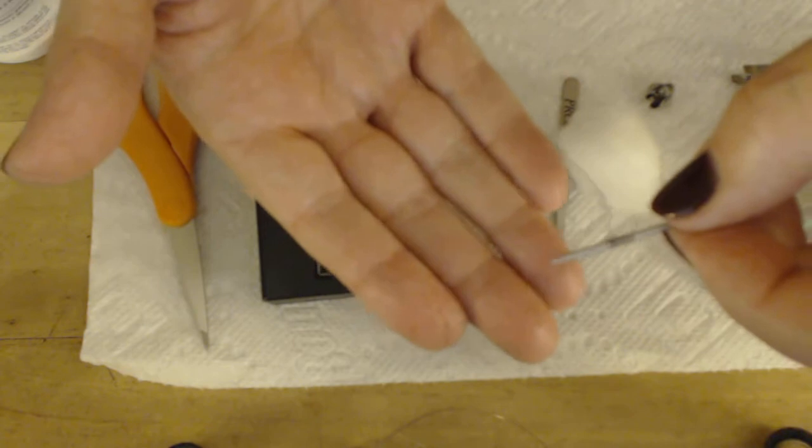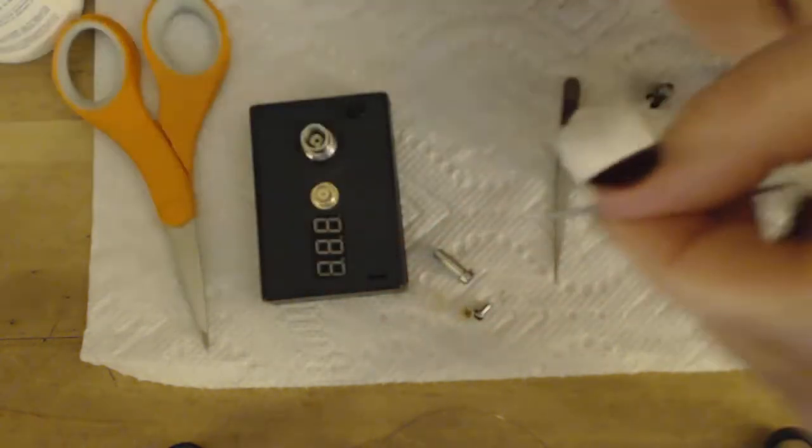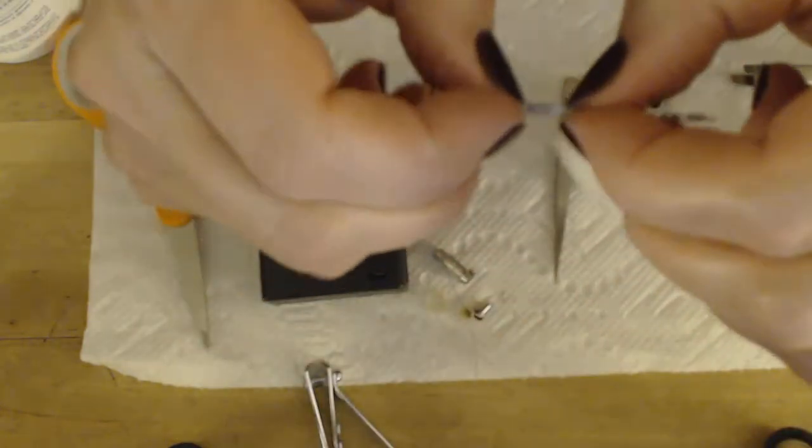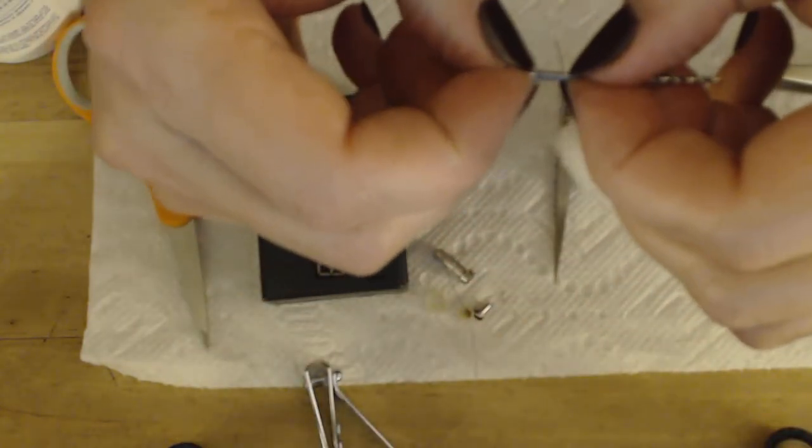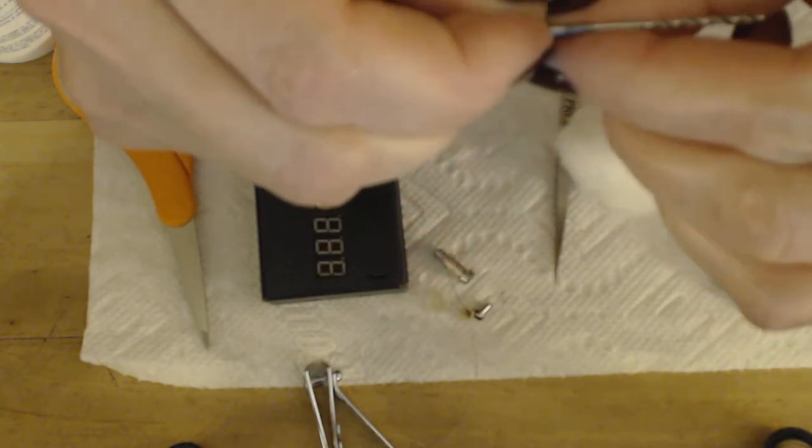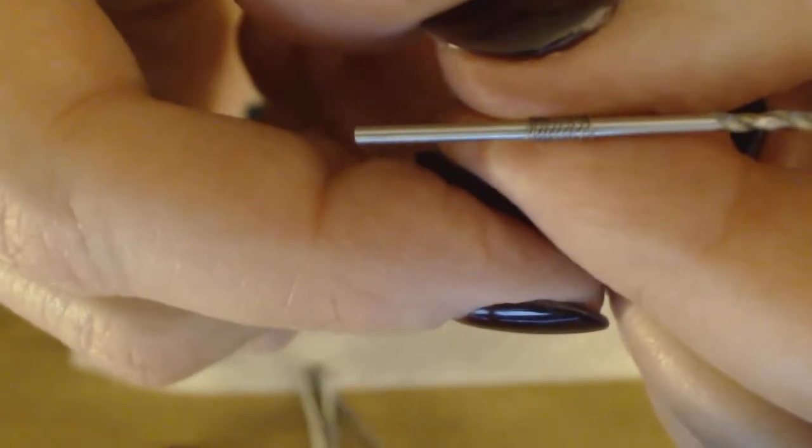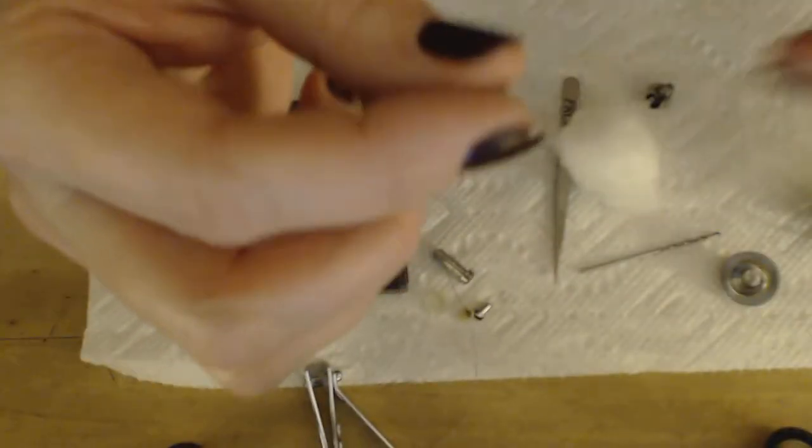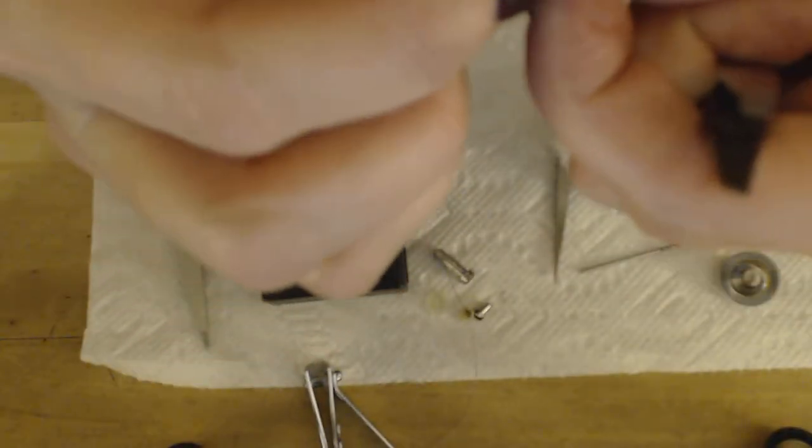Now I'm going to squeeze this coil together that's actually on the drill bit still. So that's what it looks like. Now I'm going to slide it off and I'm going to pinch the coil.